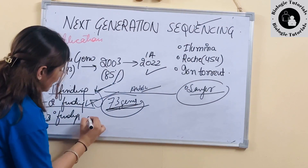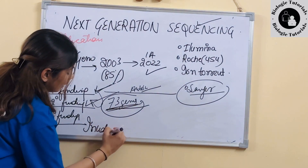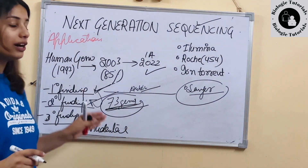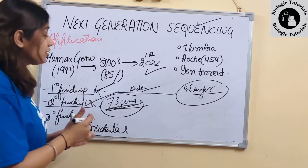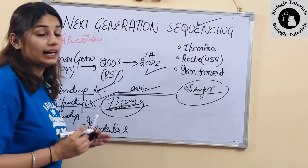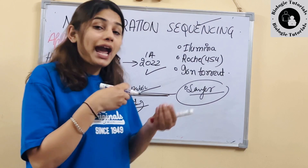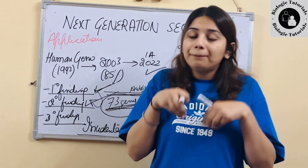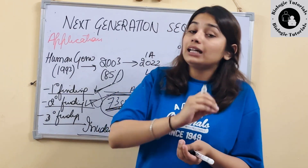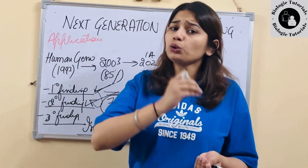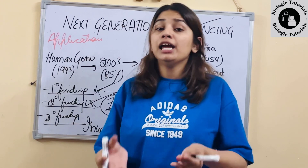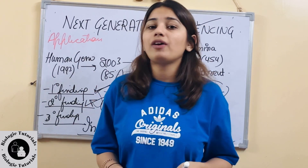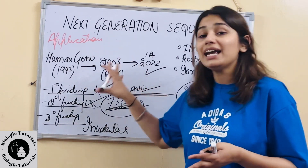Ab jo last finding hoti hai, isko hum bolte hain incidental finding. Incidental finding kya hoti hai? Chalo humne primary kar li, secondary kar li — lekin jab mein uski genome sequence saari study kar rahi thi, us time pe mujhe kuch aise variants, kuch aise mutations dikhe jo shayad abhi usko dikh nahi rahe, par adult stage mein jaake usko visible ho sakti hain. Kuch aise disorders dikhe ki jo kal ko uske liye harmful ho sakti hain. Toh aise jo findings hoti hain, woh hoti hain incidental findings.